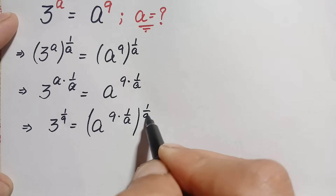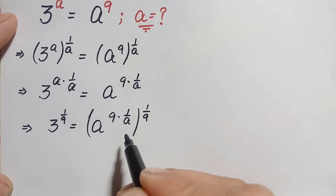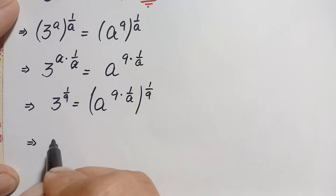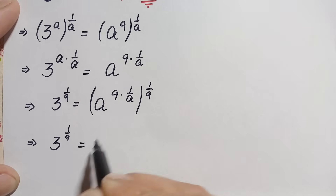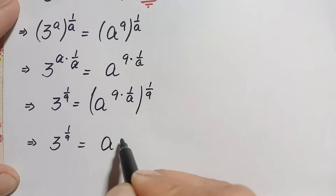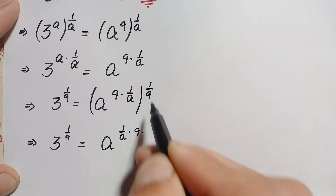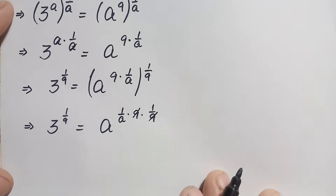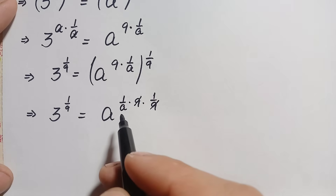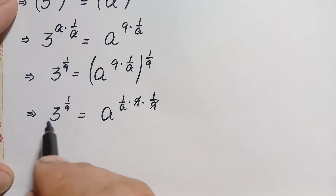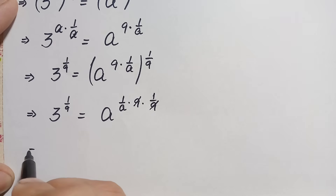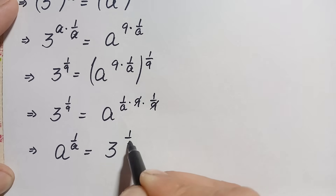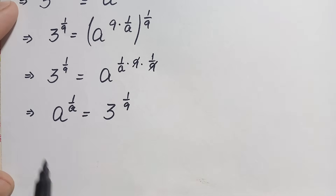We apply 1/9 as the power on both sides. Using the exponential identity on the right hand side, this becomes 3^(1/9) = 8^(1/a), since 9 × (1/9) cancels to give 1, leaving only the power 1/a. We can rewrite this as 8^(1/a) = 3^(1/9).